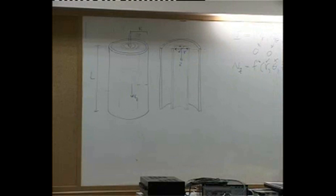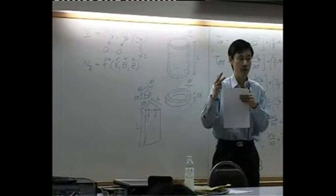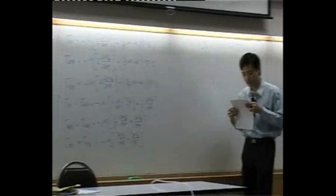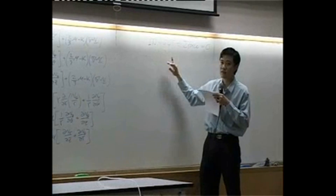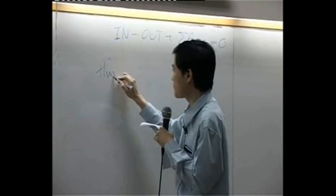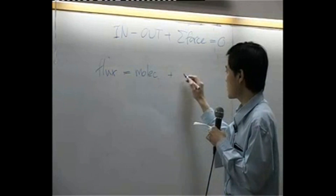Once you set up the shell system correctly, the next step is to set up the equation of balance. Momentum balance consists of two or three parts: input, output, and force — in minus out plus sum of forces equals zero at steady state. The input and output are determined according to the momentum flux. The flux itself can be divided into two parts: the molecular part plus the convective part.